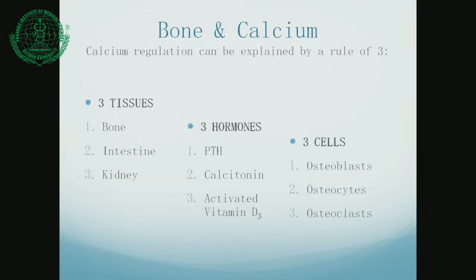There is a rule of three for calcium regulation, which can be explained as three tissues, three hormones, and three cells. The three important tissues are the bone, the intestine, and the kidney. The three hormones are parathyroid hormone, calcitonin, and vitamin D3. The three cells are the osteoblasts, osteocytes, and osteoclasts.